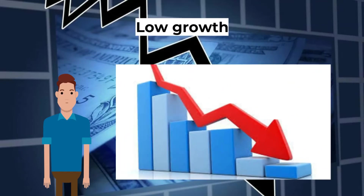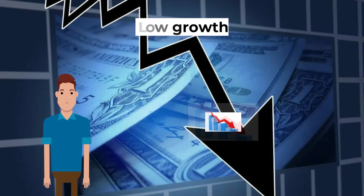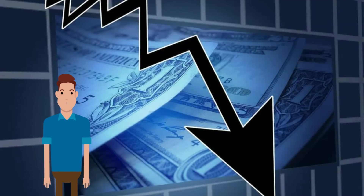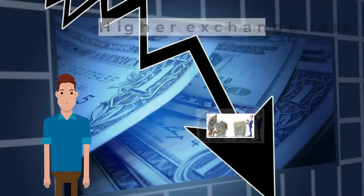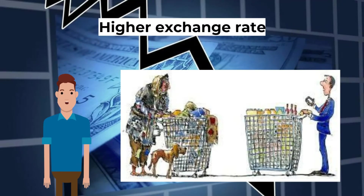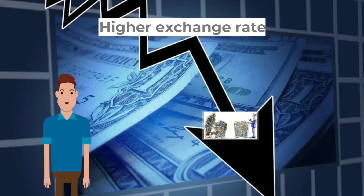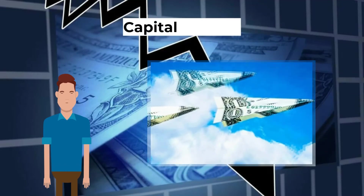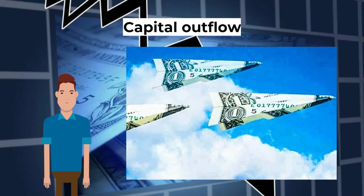What are the consequences of a current account deficit? Low growth: a deficit leads to lower aggregate demand and therefore slower growth. Unemployment: a deficit can lead to loss of jobs in domestic industries as demand for exports is low and demand for imports is high. Lower standard of living: in the long run, persistent trade deficits undermine the standard of living as demand and income fall.